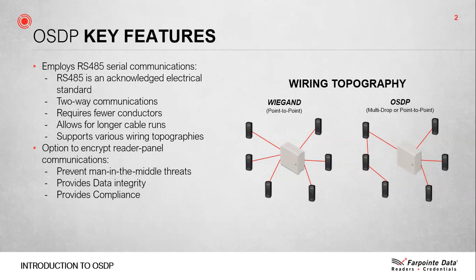Encrypted communications between a reader and controller is a huge feature. OSDP can be used to prevent man-in-the-middle hacks on the data lines. This is the type of hack where a hacker intercepts data, then secretly relays and possibly alters the communication between the reader and the door controller. Another benefit of OSDP's encryption is data integrity. This concept is often overlooked. Specifically, by implementing encryption, one can trust that the data being communicated is authentic and unaltered from what was originally communicated — maybe something an IT manager would be very interested in.